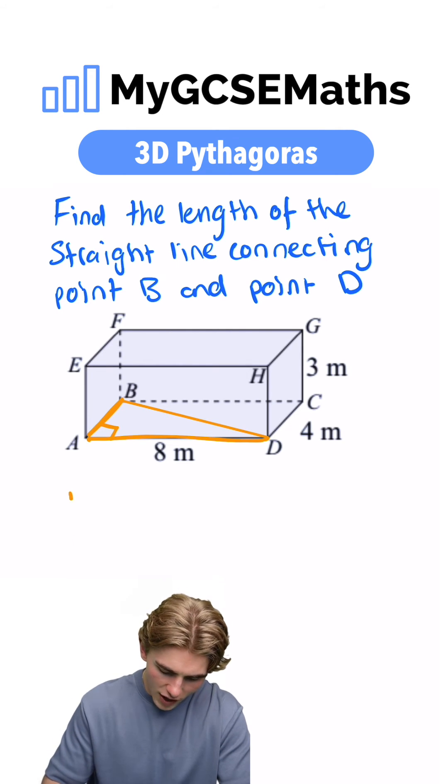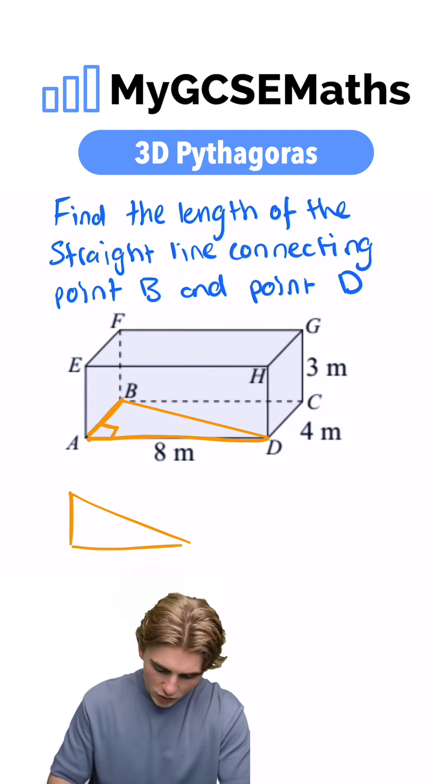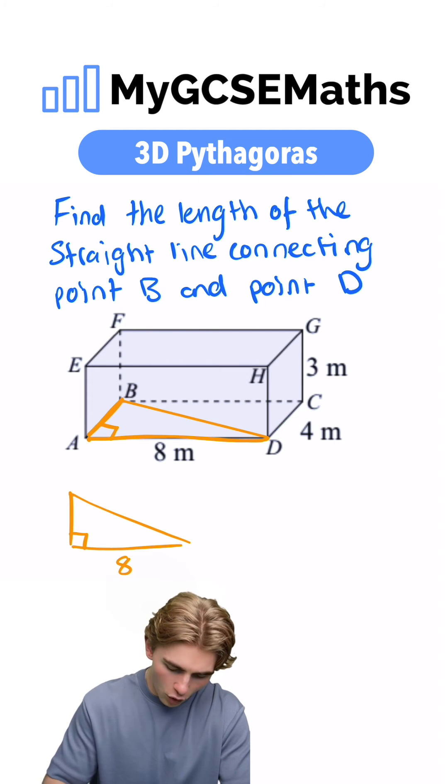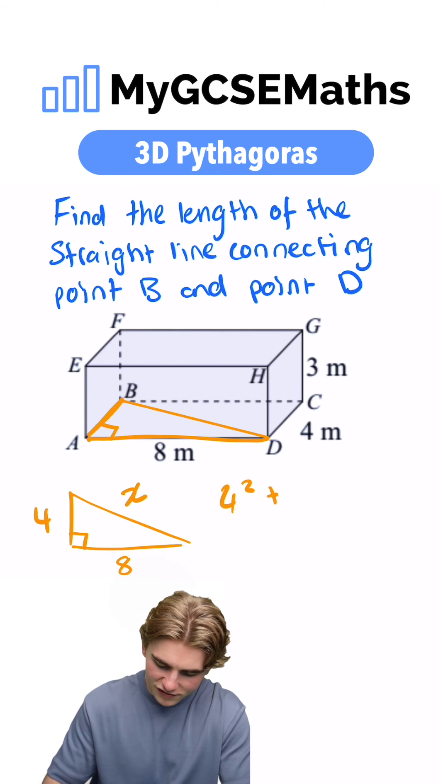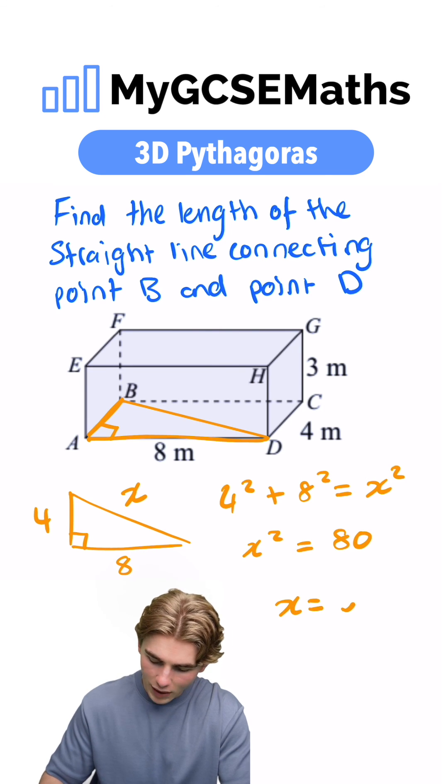We can see that this is kind of a right-angled triangle, which has a side length here of 8, a side length on the left-hand side of 4, and then we want to work out the hypotenuse. We can call it X. Here, we can say that 4 squared plus 8 squared equals X squared. X squared equals 80. So, X equals the square root of 80.